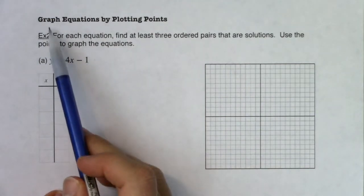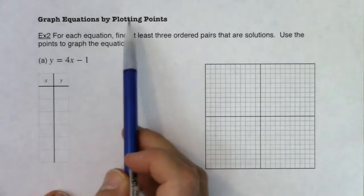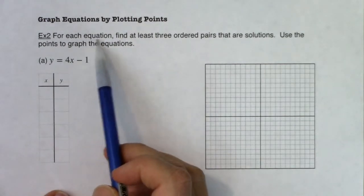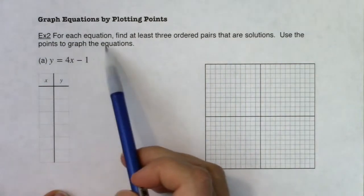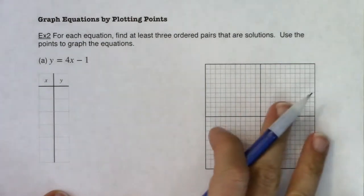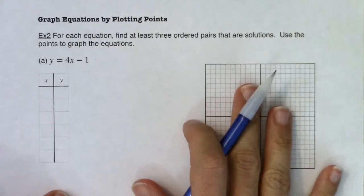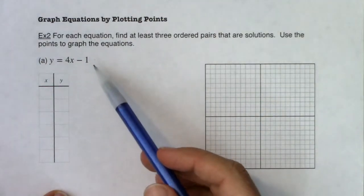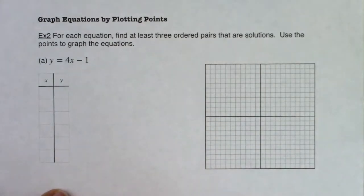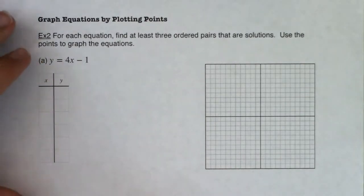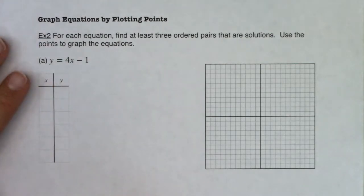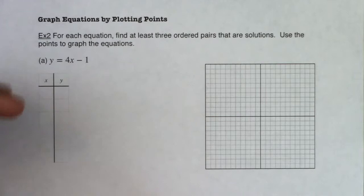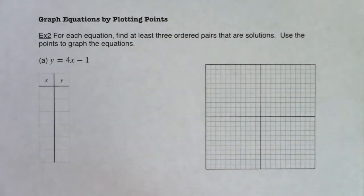Welcome back. So let's take a look at our next example. We're now going to graph equations by plotting points. For each equation, find at least three ordered pairs that are solutions, then use those points to graph the equations. In example two, we'll graph three equations by hand — no calculators, no technology. In example three, I'll show you how a calculator or technology could have assisted you. I'll never take away technology from you, but it's a good exercise to graph by hand. This technique will always work — it might take a little longer, but it'll always work.